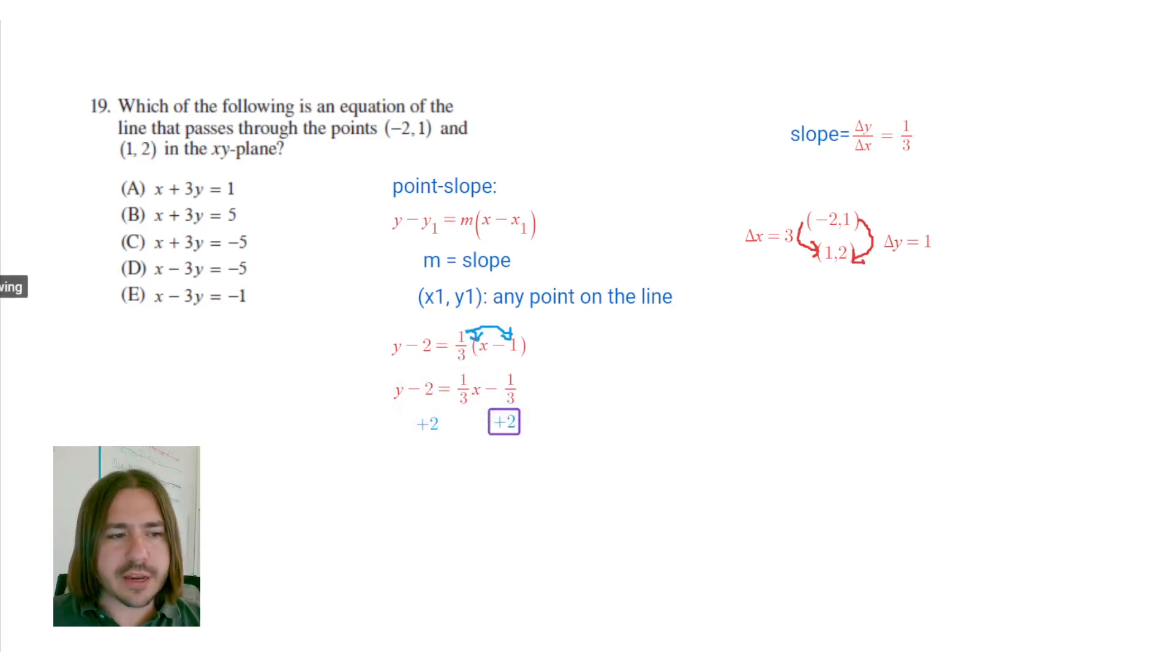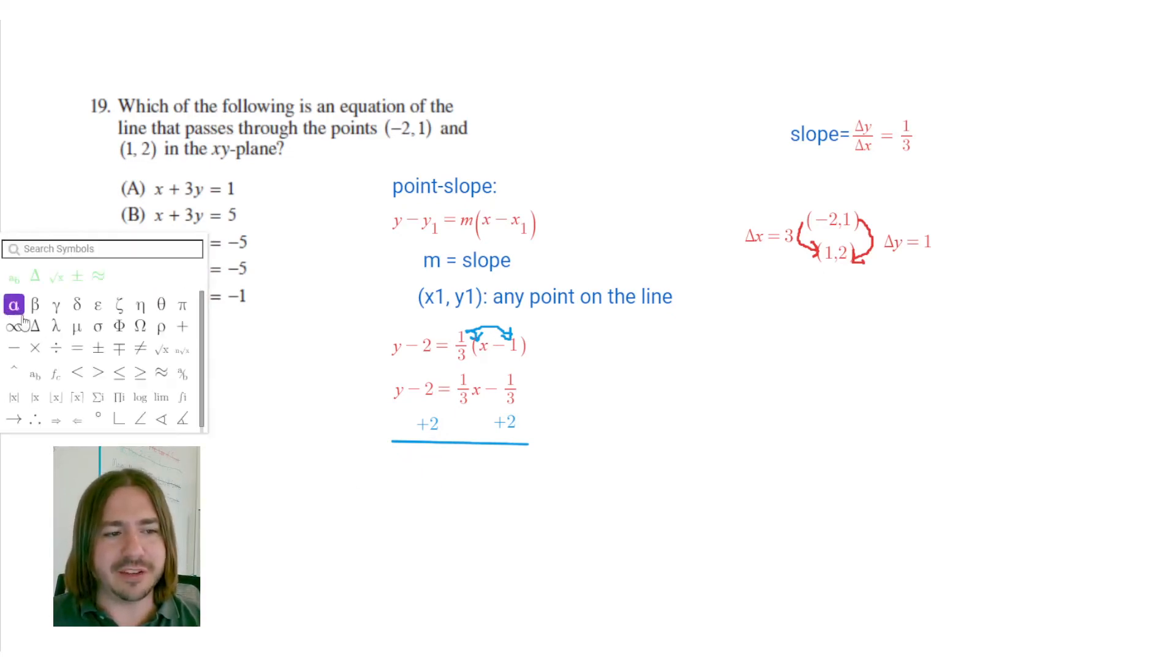So I'm going to multiply 1/3 by x and 1/3 by -1. That's going to give you y - 2 equals 1/3x - 1/3. Next, I'm going to add 2 to both sides of the equation. Now, you're going to get a calculator on the CLEP test. So if you're trying to add and subtract fractions, honestly, I would just recommend you put that in the calculator. You don't want to mess it up because you messed up the arithmetic. So we've got 2 - 1/3. 2 would be 6/3 minus 1/3 would be 5/3. So this would be plus 5/3.